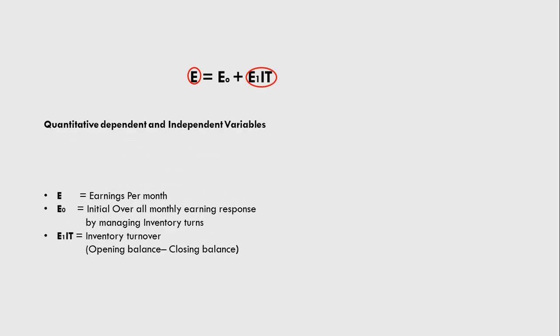Capital E is earning per month. Earning per month is a dependent variable. And E₀ is initial overall monthly earning response by managing inventory terms, which is considered as an intercept of a function.